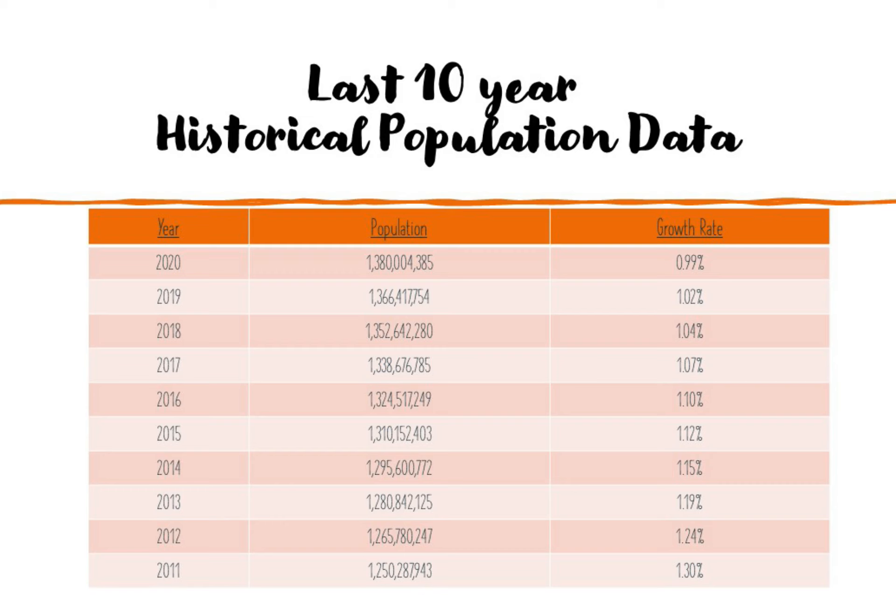Now let's have a look at this table of the last 10 years of historical population data. If we see the table, in the year 2011, the population was 1.25 billion and the growth rate was 1.30%. Then after each year, you see a constant increase in the population — like 2012, it was 1.26 billion. Then coming to 2020, it was 1.38 billion and the growth rate is 0.99%. The growth rate is decreasing year by year while the population is increasing year by year.